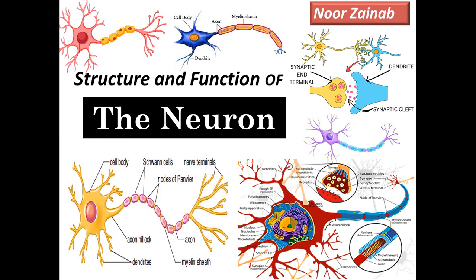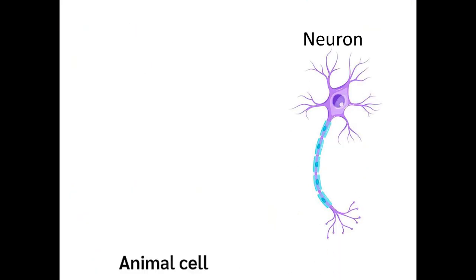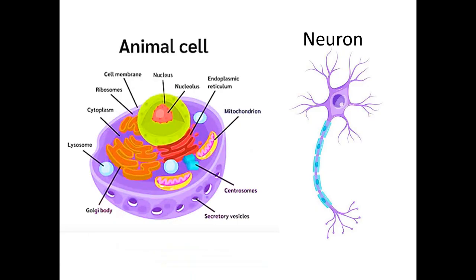All of our body parts are made up of cells, cells make up tissues, and tissues make up organs. So what distinguishes the neuron from other types of body cells? Both the neuron and the animal cell contain the same organelles such as the nucleus, mitochondria, and endoplasmic reticulum. However, the neuron is a specialized cell because it consists of specialized structures such as dendrites, axons, and the cell body, also known as the soma. These structures are not present in the typical animal cell.